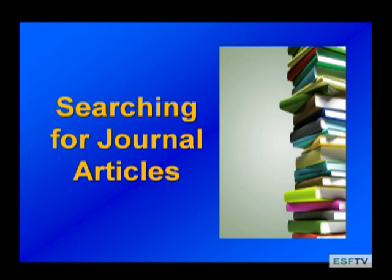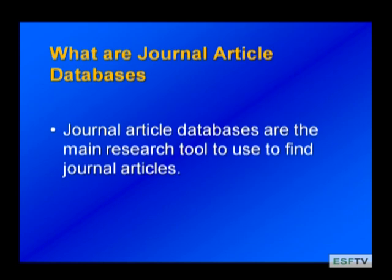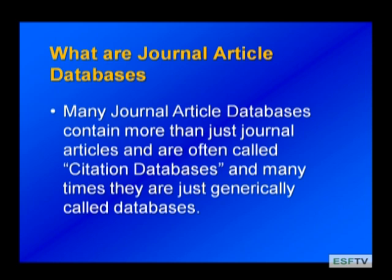Welcome. In this segment today, we're taking a look at searching for journal articles. The way to search for journal articles is to use a research tool called Journal Article Databases. The term journal article databases is often just called citation databases or just generically databases. So be careful when you're out there doing your research — when someone tells you to search a database, it's probably a citation database or journal article database.